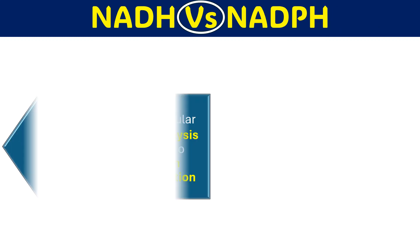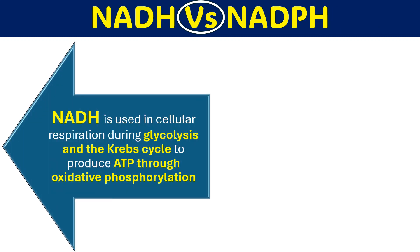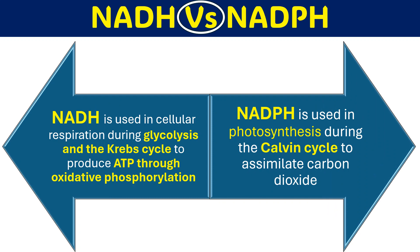The basic simple difference is that NAD/NADH is normally used during cellular respiration processes — glycolysis and the Krebs cycle — and it gives us ATP through oxidative phosphorylation. When we talk about NADPH, this is normally used during photosynthesis and is generated in the pentose phosphate pathway. It is mainly used in the Calvin cycle for assimilation of carbon dioxide.